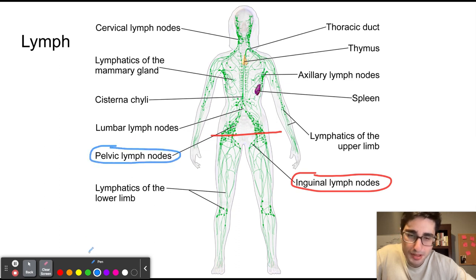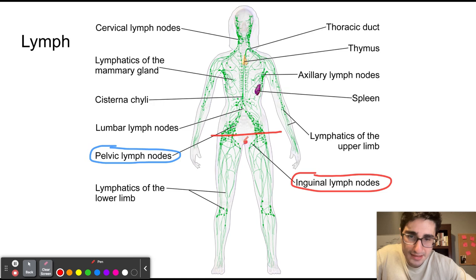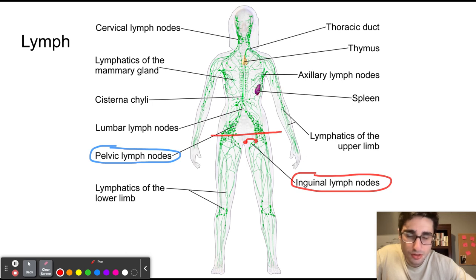Our patient presented with enlarged superficial inguinal lymph nodes, so his cancer must have originated from below the pectinal line. Because there is a mass below the pectinal line, lymph would drain into the superficial inguinal lymph nodes, and it makes sense that the cancer would spread to these nodes first.